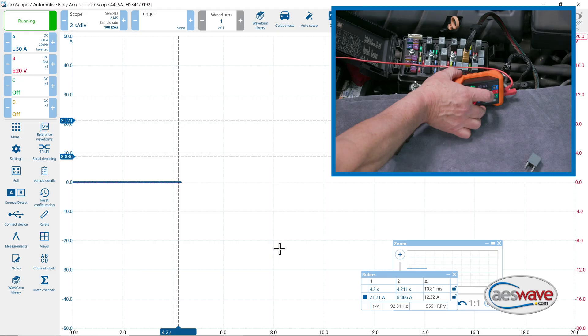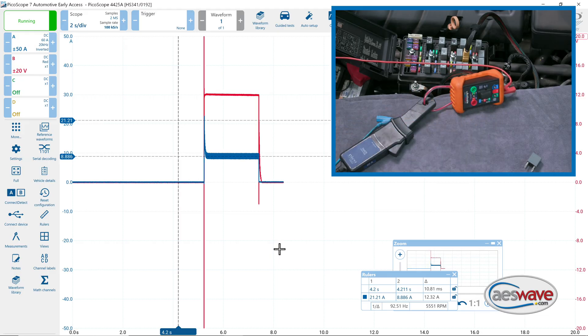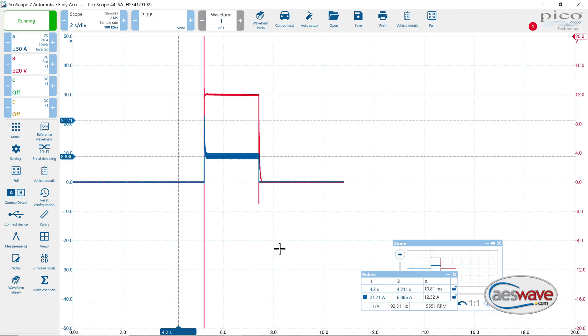We're going to turn the Uactivate switch on, I'm going to turn it off, and we'll stop the scope and take a look and see what we got.